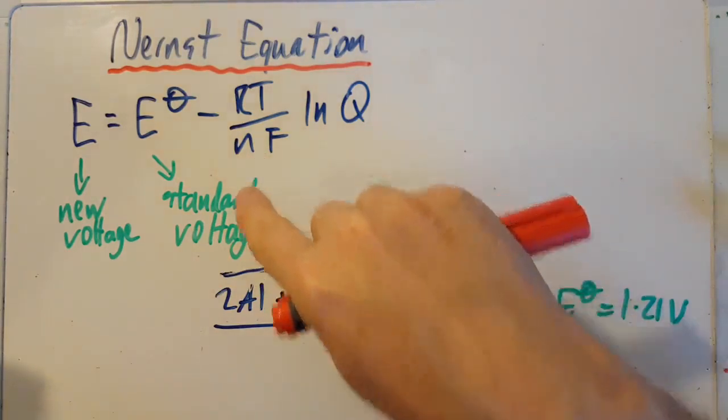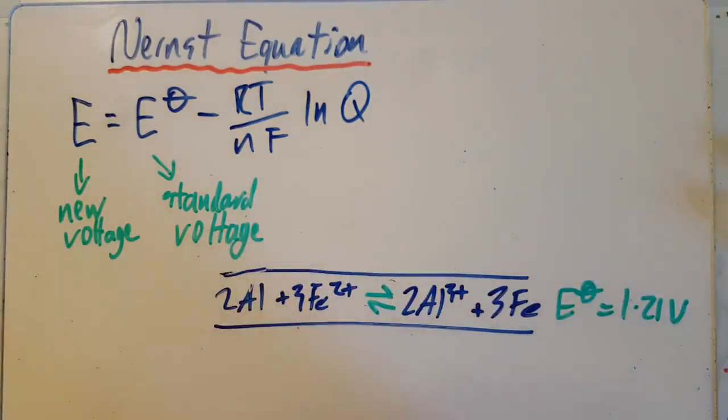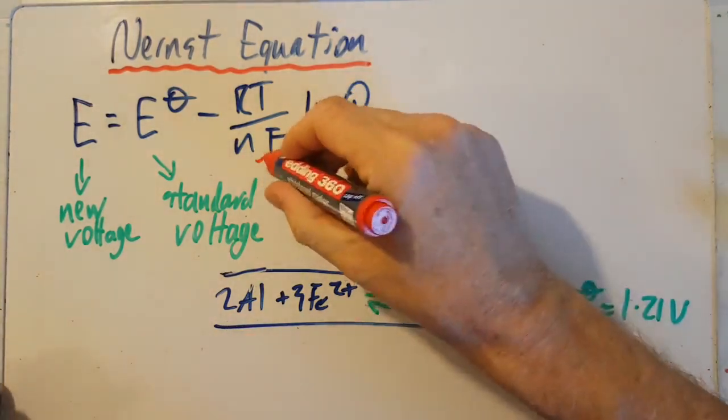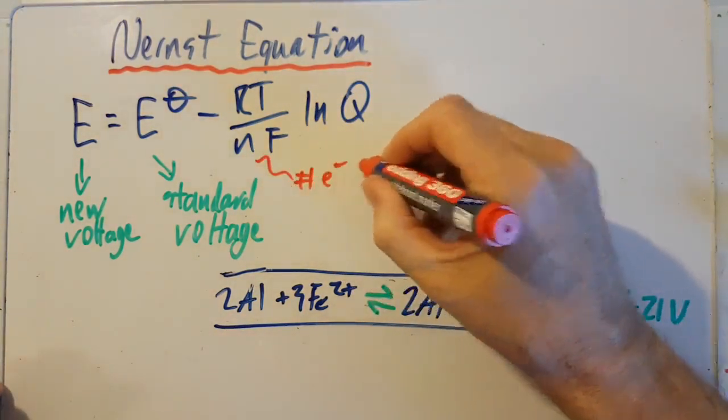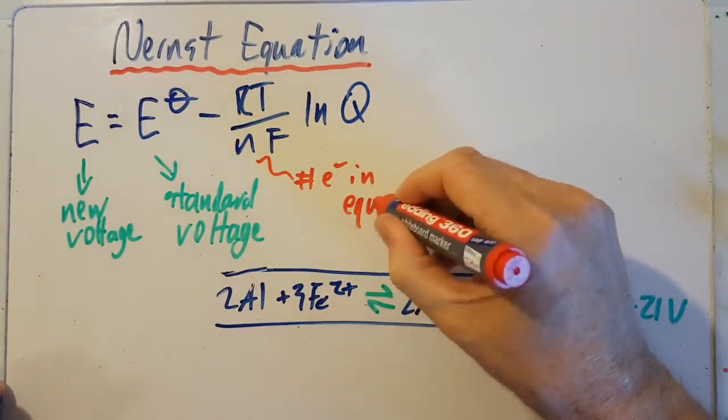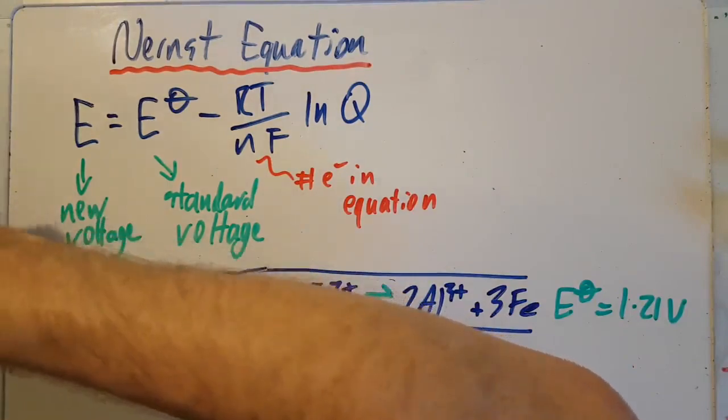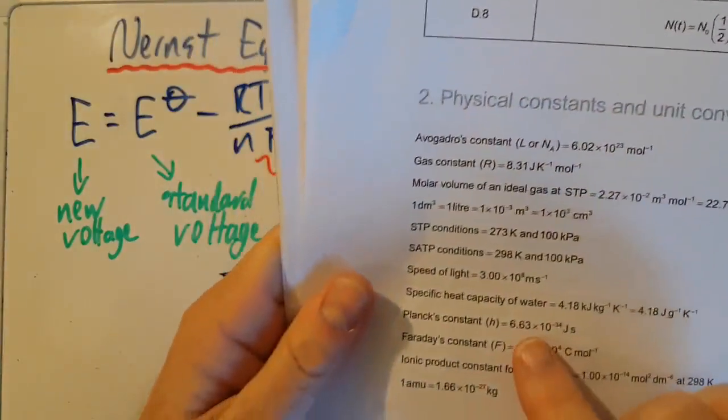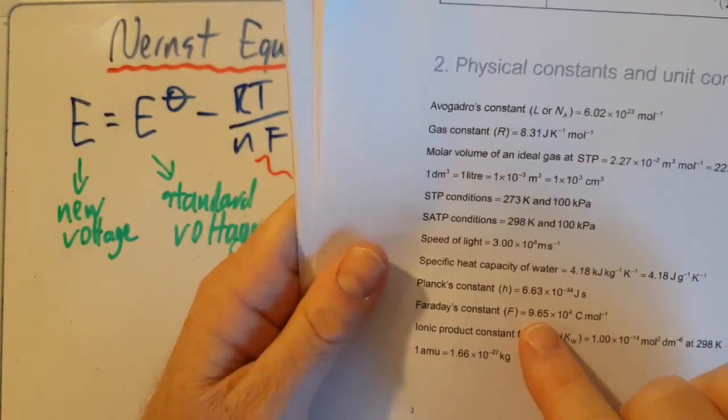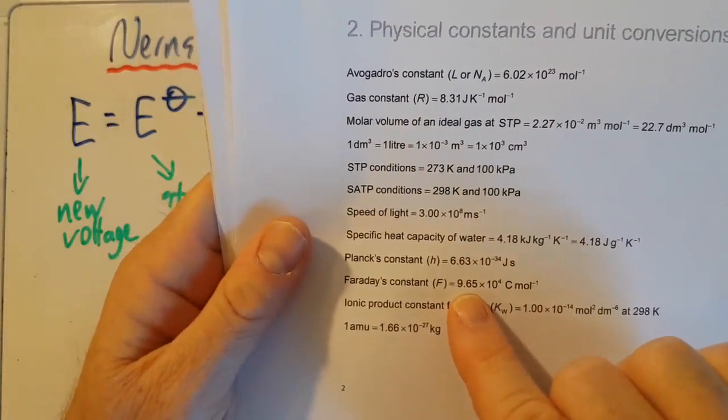N is the number of electrons moving around in this equation. So if you remember, there are six electrons jumping around. Just double-checking, two aluminiums go to two aluminum 3+, yeah, there's a difference of six electrons. So n is the number of electrons in the equation. And what the F is F? Well, F is Faraday's constant. That's Planck's constant, Faraday's constant here. Again, that's in the data booklet.